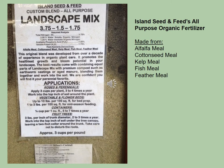A local garden store, Island Seed and Feed, creates their own landscape mix — general for landscape plants, fruit trees, vegetables, and roses. Its NPK numbers are 3.75% nitrogen, 1.5% phosphorus, and 1.75% potassium. It can be used as a general all-around landscape fertilizer for lots of different things. It's made from alfalfa meal, cottonseed meal, kelp meal, fish meal, and feather meal. It's a nice all-purpose one that we use on campus all over the place regularly.